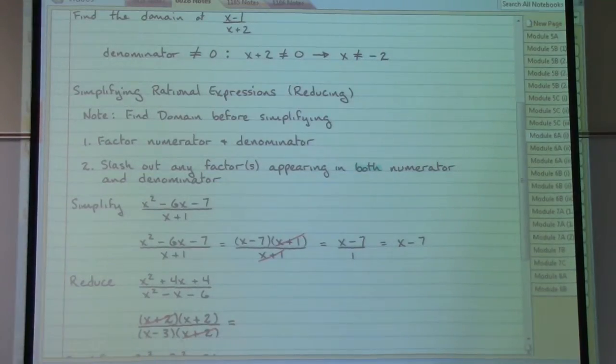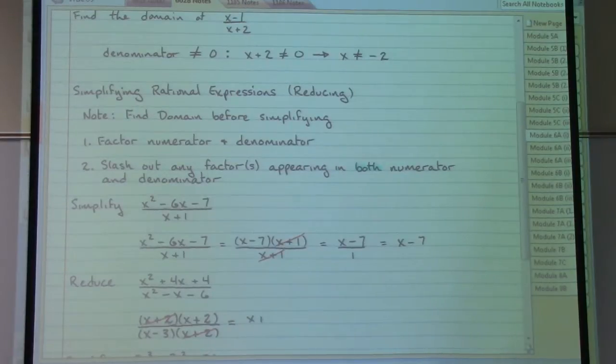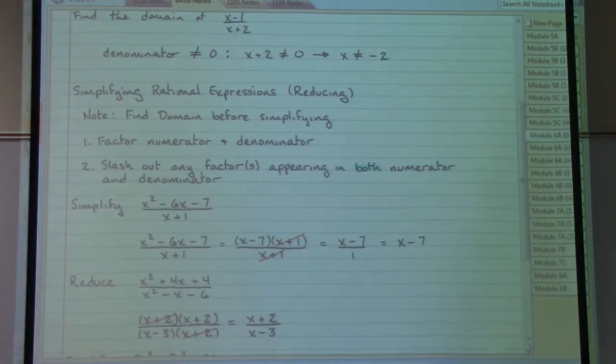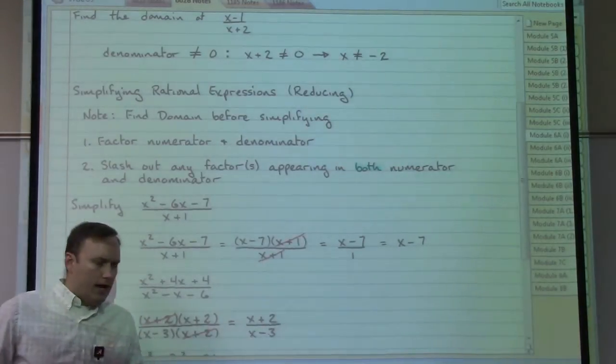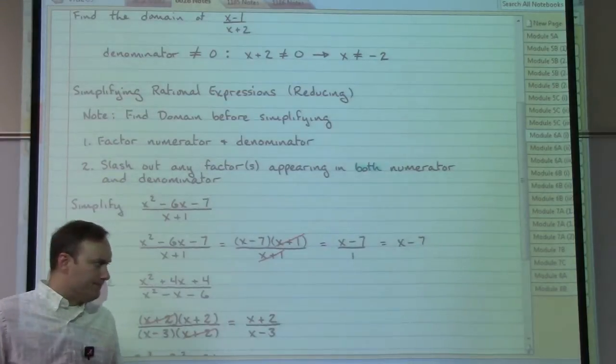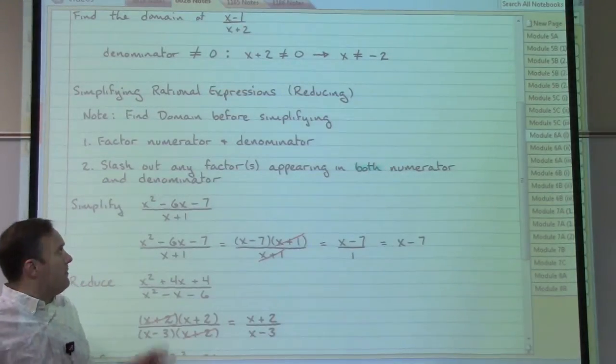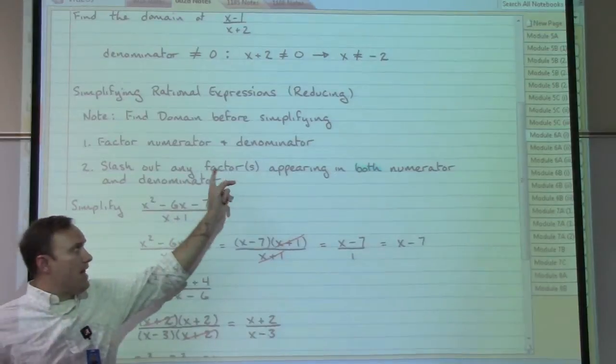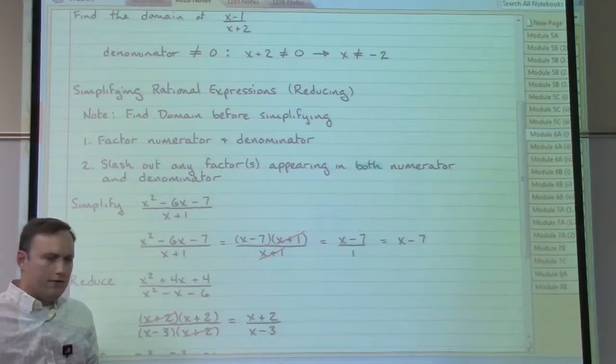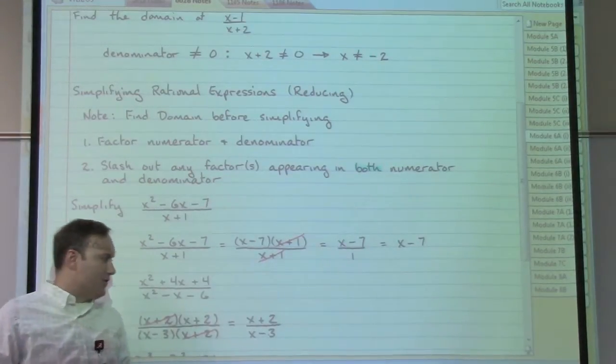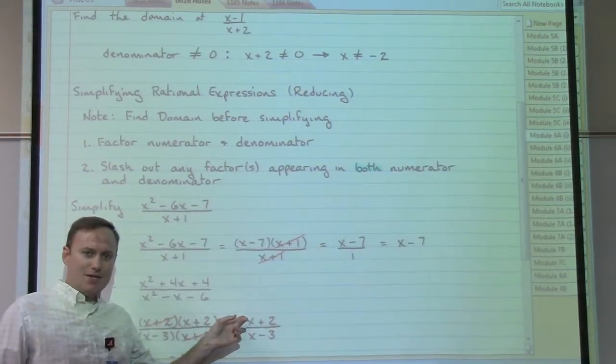Now, that means that we would still have, for our answer, x plus two on the top and an x minus three on the bottom. Now that we've actually got something that's a little bit more commonplace to look at for an answer here, a word of warning, do not go slash happy. Remember that that step says that we're allowed to slash out common factors. So we've got to make sure that we keep in mind the difference between a factor and a term. In this answer, the x is a term,